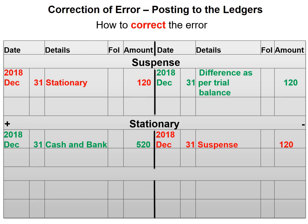In order to correct this error, we will credit our stationery account with 120, and debit our suspense account to return its value to zero. By crediting our stationery account, we decrease it. As mentioned, if we overcast a certain account, we need to decrease that account. The stationery account is an expense account, and expenses decrease on the credit side.